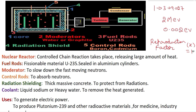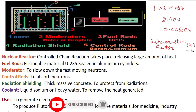The steam generated in the steam generator rotates the turbine and enters the condenser, where it gets converted back into water and returns to the steam generator. The coolant, after absorbing heat from the core, enters the steam generator, transmits its heat to the water, gets cooled, and goes back into the core with less heat. This process continues in a cycle.